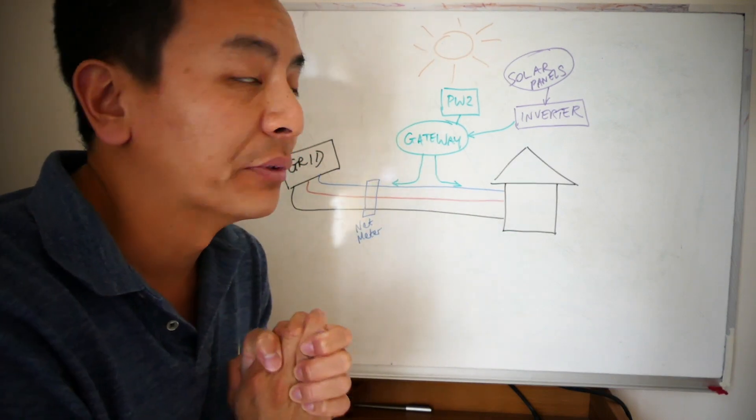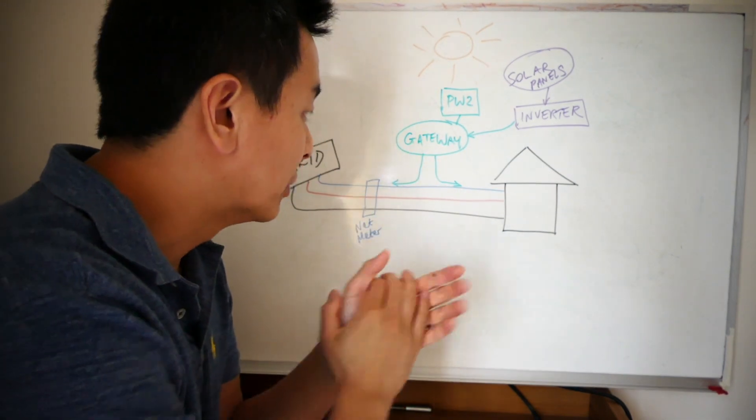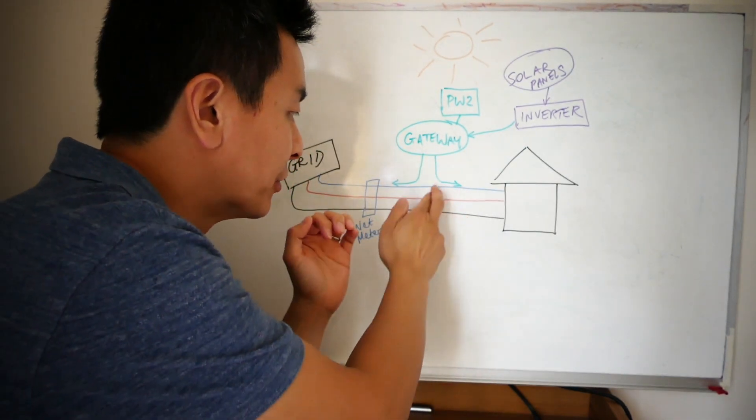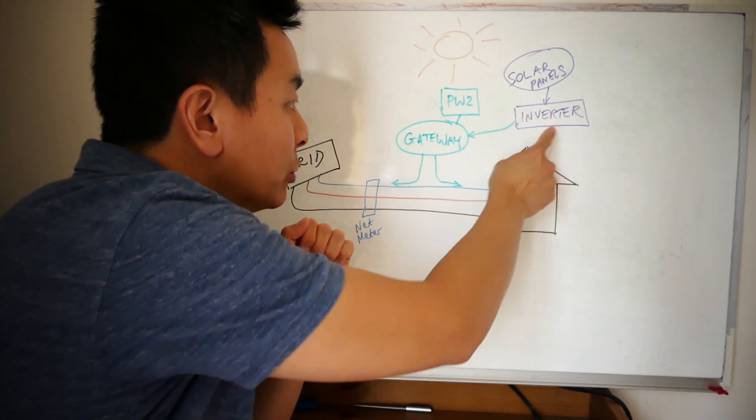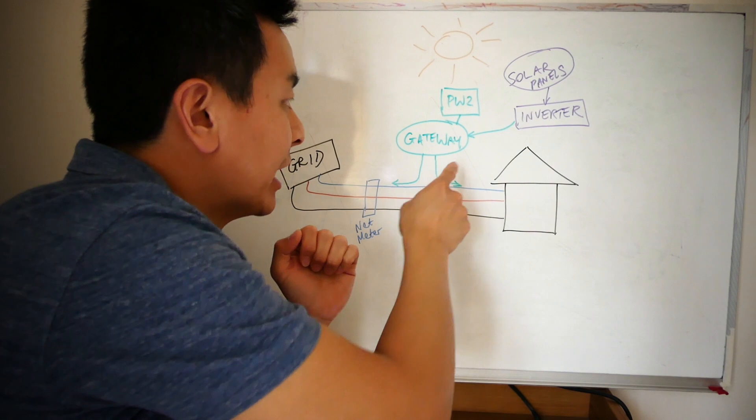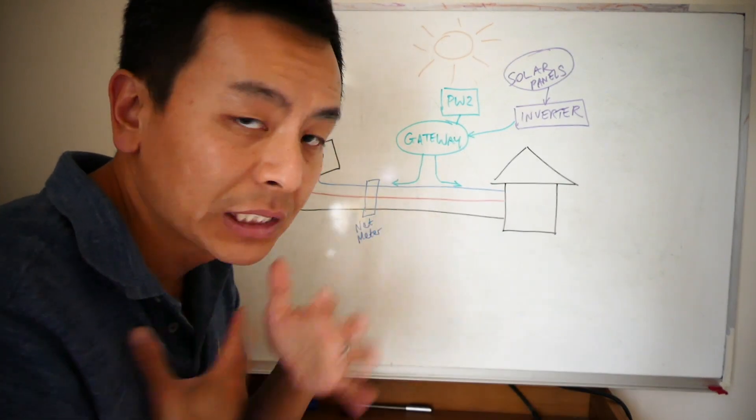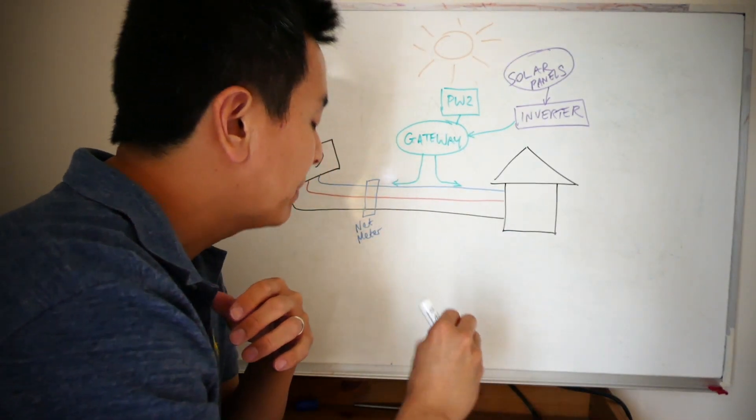Well, first of all, this situation here is a three-phase home, as you can see: red, blue, and black, with a net meter and a single-phase inverter and a single-phase gateway with one Powerwall 2. So in this situation, which is very similar to my home actually, what happens here...